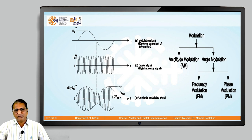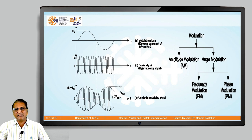In front of you there are three waveforms, all in the time domain. There are two types of domains: frequency domain and time domain. Whenever the x-axis is time and y-axis is amplitude, it is called the time domain. Whenever the x-axis is frequency and y-axis is amplitude, it is called the frequency domain.